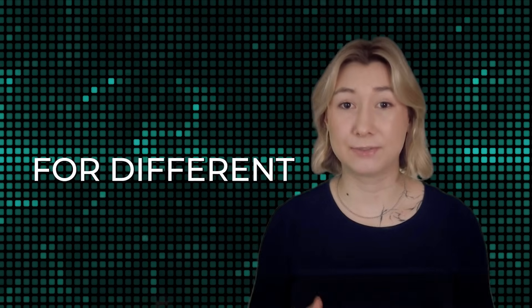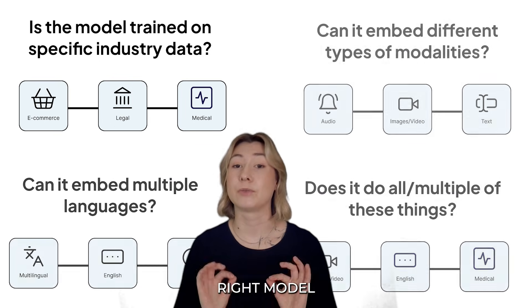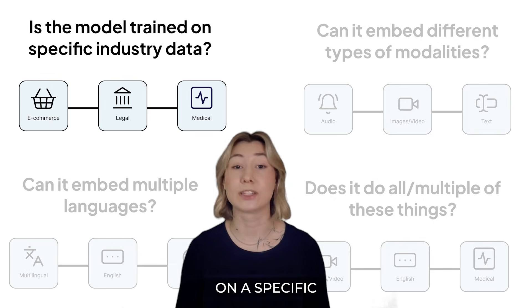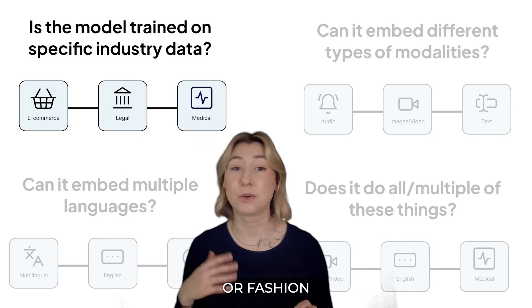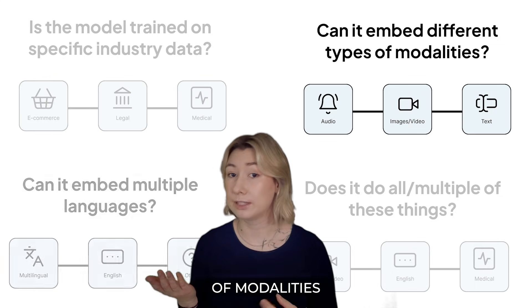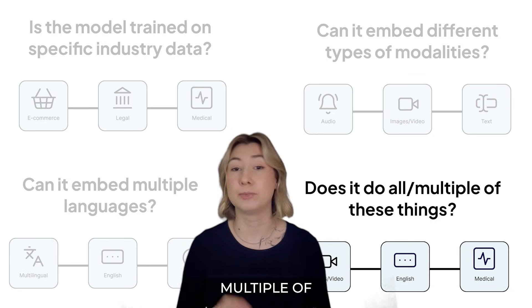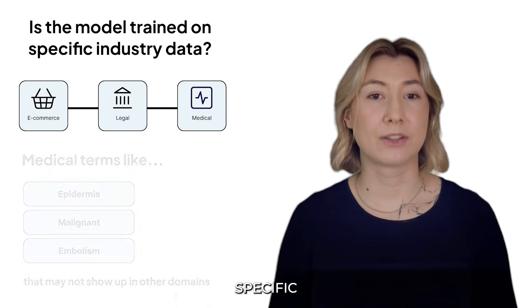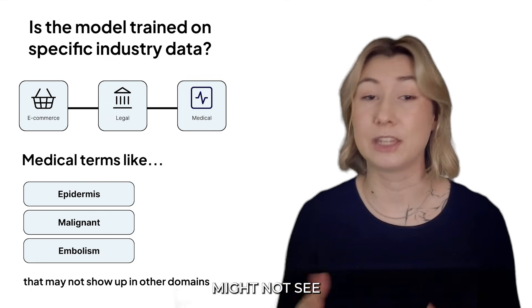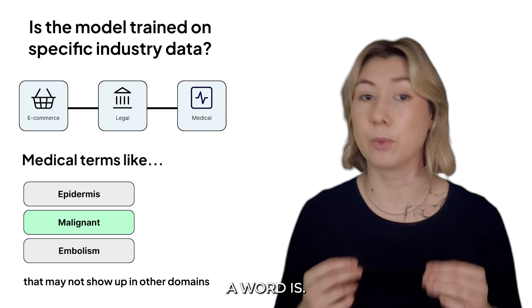Embedding models can be trained differently for different applications, and there are several things to consider when looking for the right model fit. The first is whether the model is fine-tuned on a specific flavor of data, like legal, medical, or fashion e-commerce text, or has capabilities for different modalities or languages. Models trained on specific industries may better handle industry-specific terms and understand how relatively important a word is.